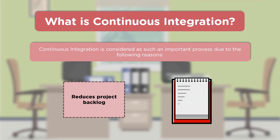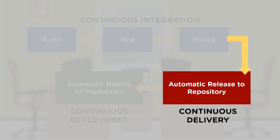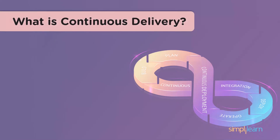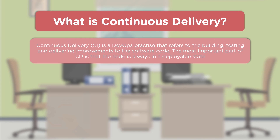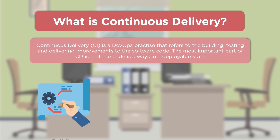Next is continuous delivery — automatic release to the repositories. Continuous delivery is a practice that refers to building, testing, and delivering improvements to the software code. The important aspect is that the code is always in a deployable state, ready to be deployed to any environment at any desired time.